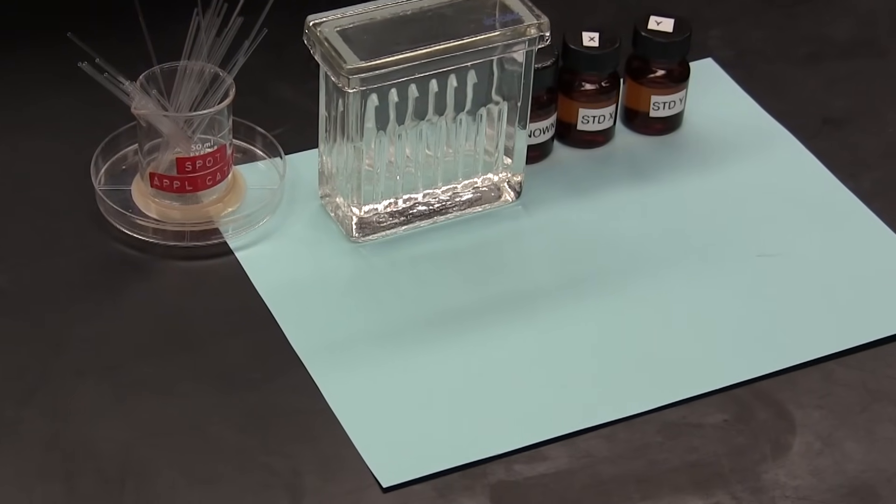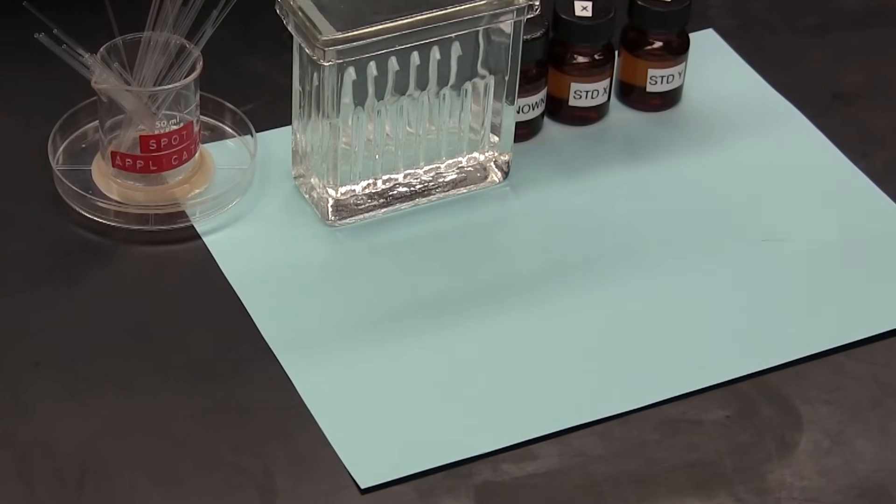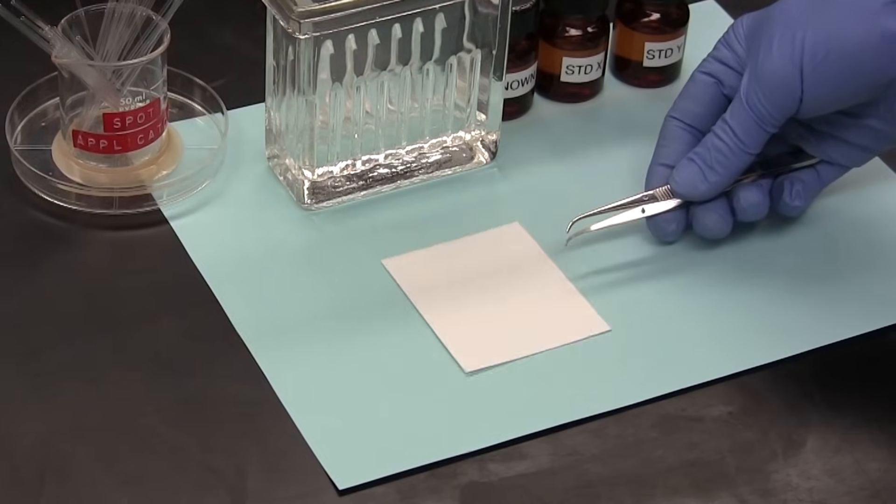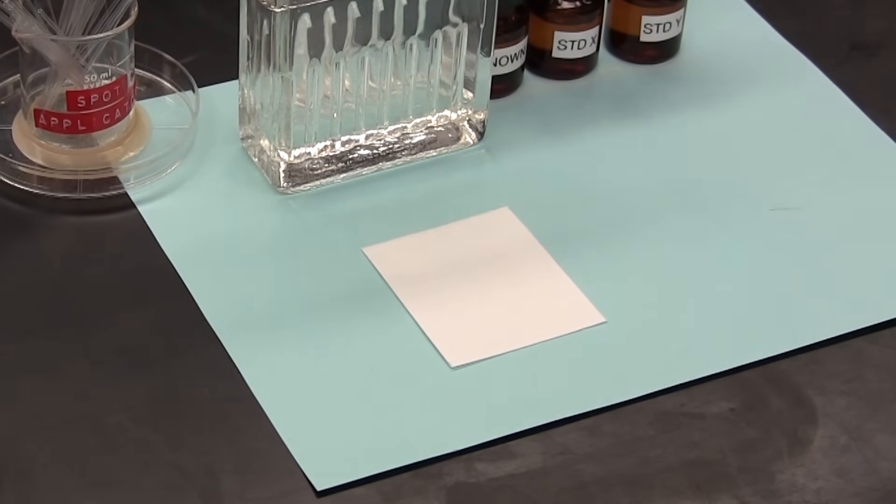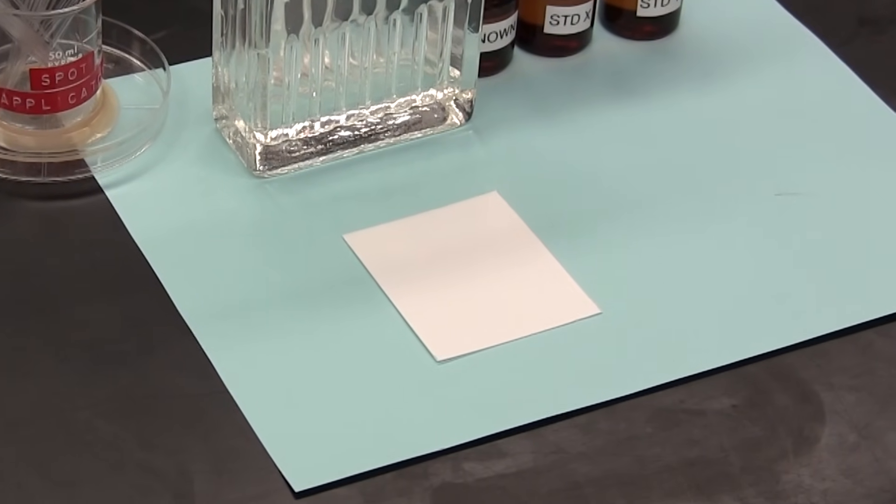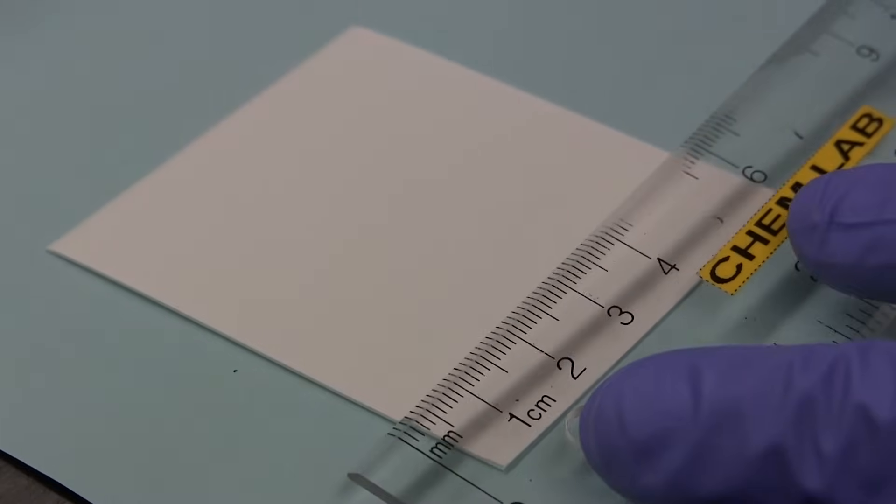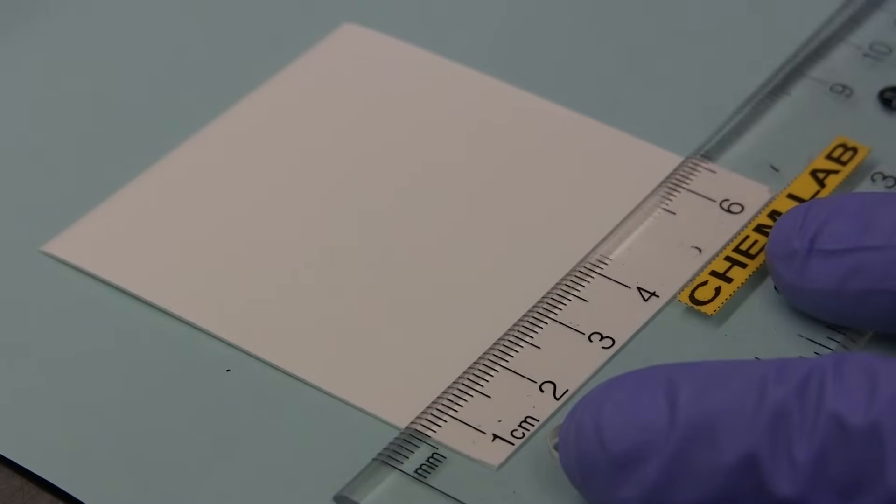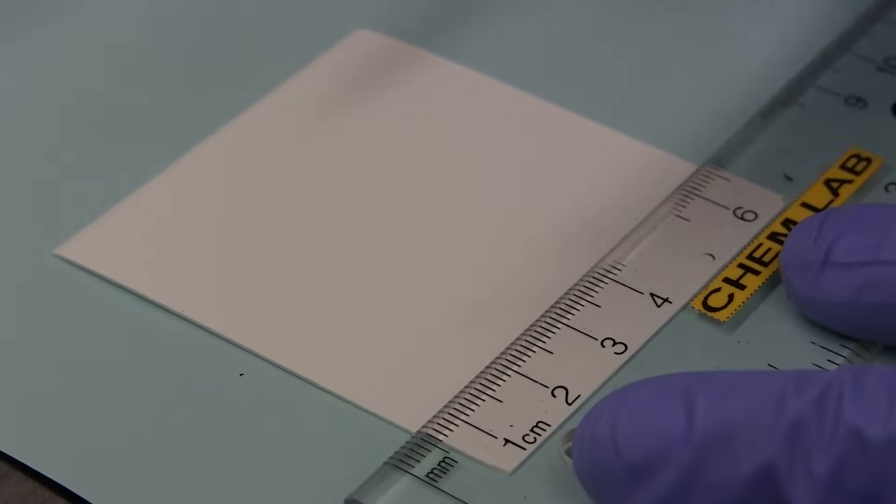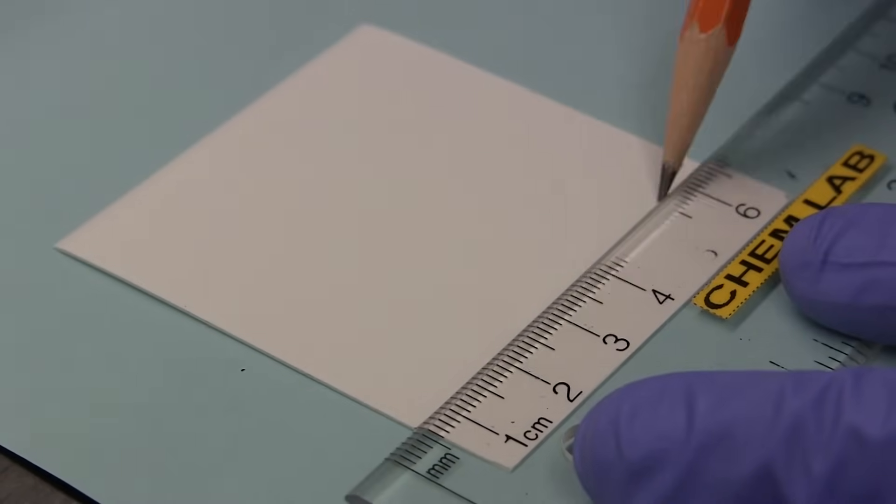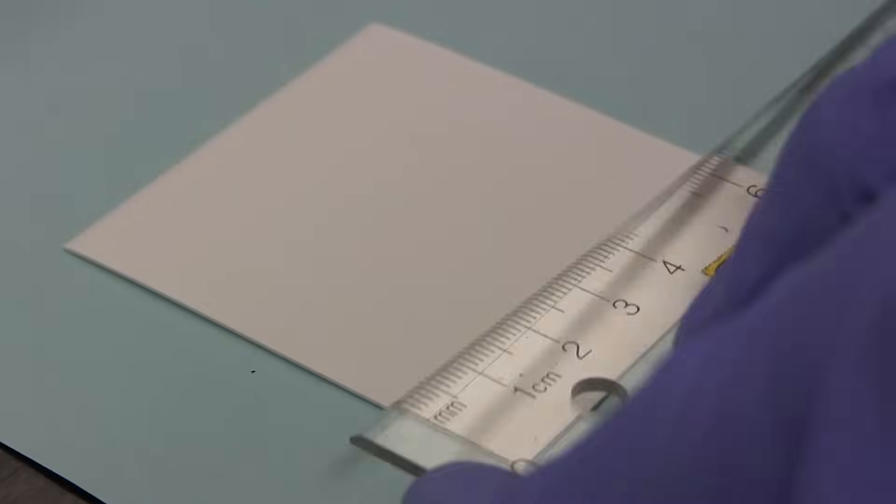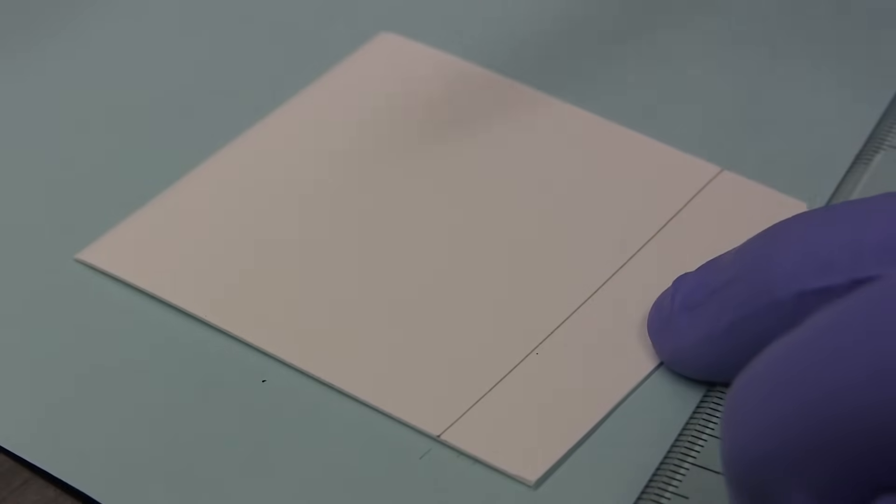First of all, we need to prepare the TLC plate. Make sure that you handle it only by its edges, or use tweezers, since we don't want to contaminate the silica gel surface. A ruler is used to draw a line using a pencil about a centimeter from the bottom edge of the plate. Draw only a very light line and try not to score the surface of the silica. This line is called the origin.